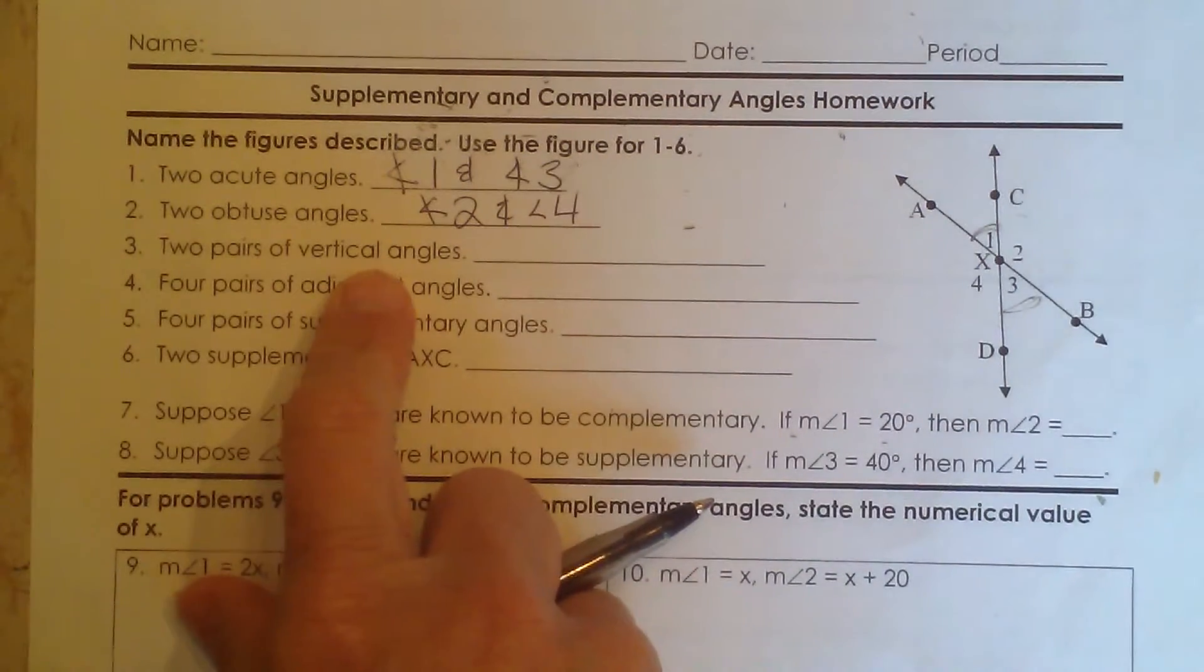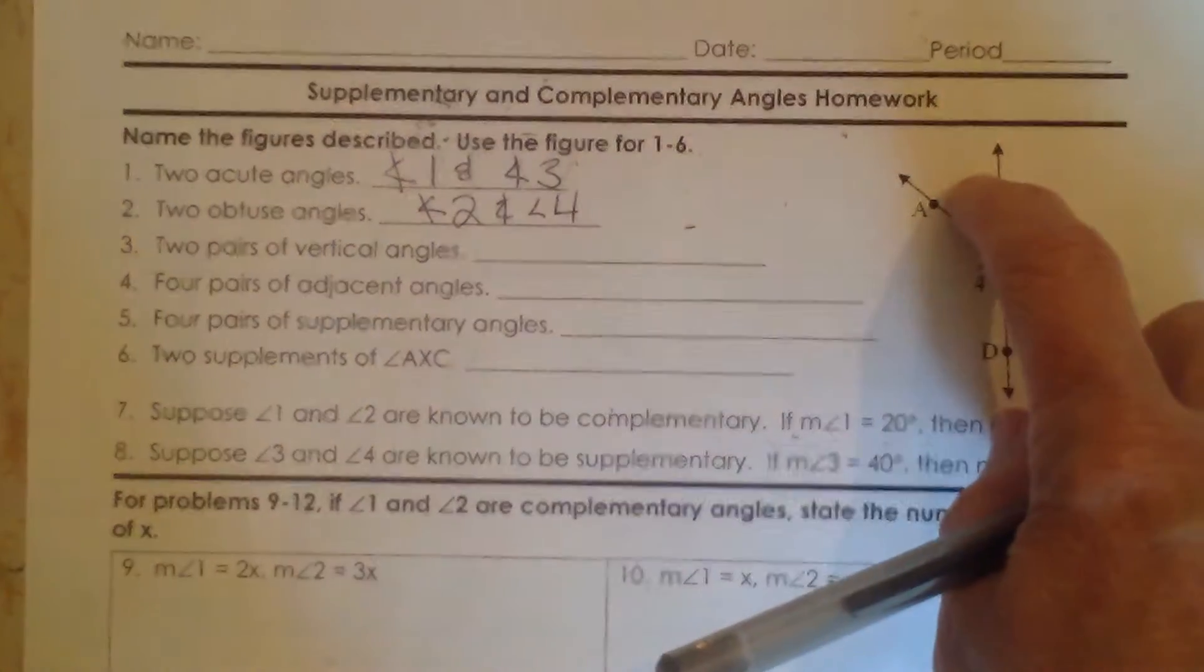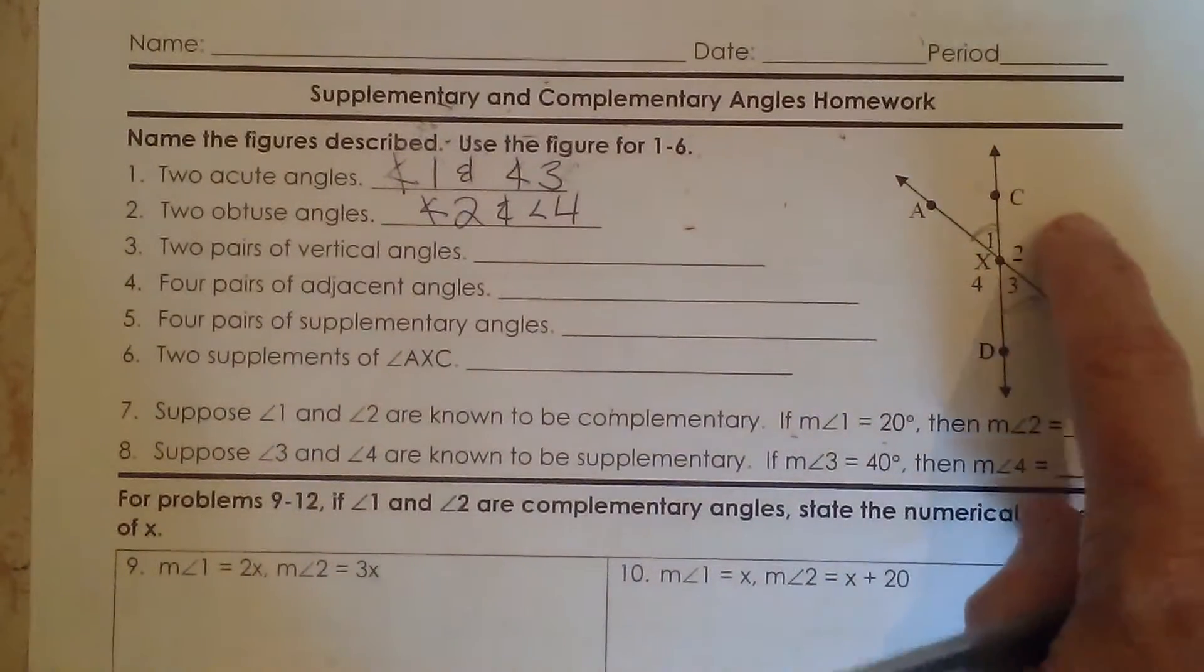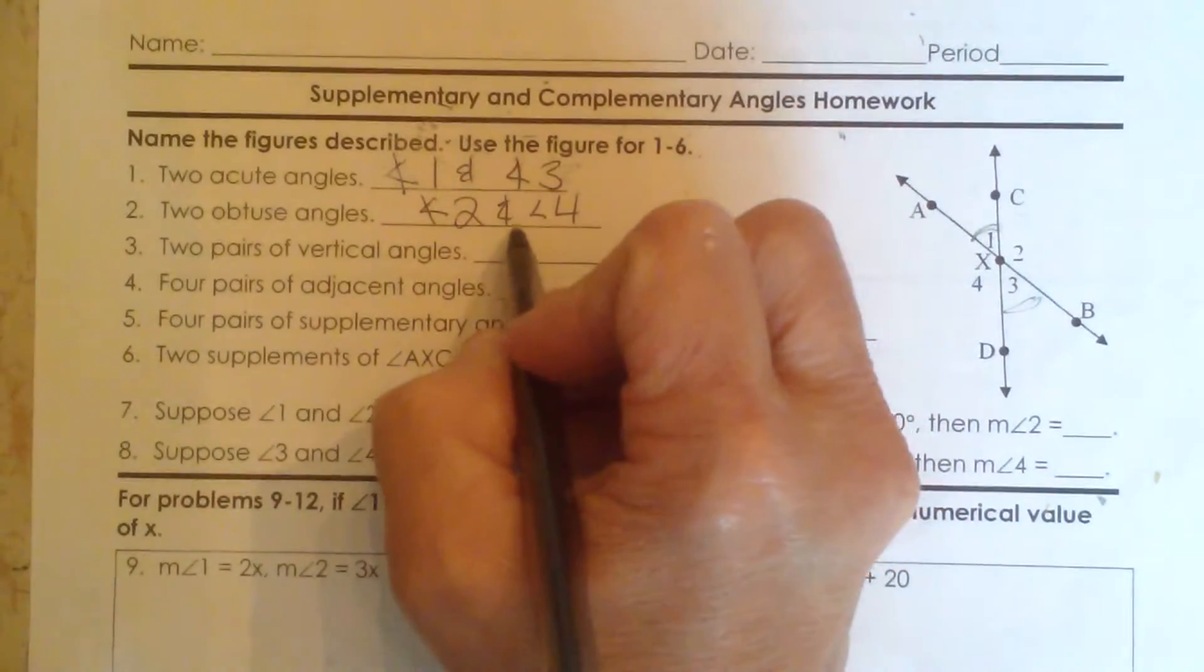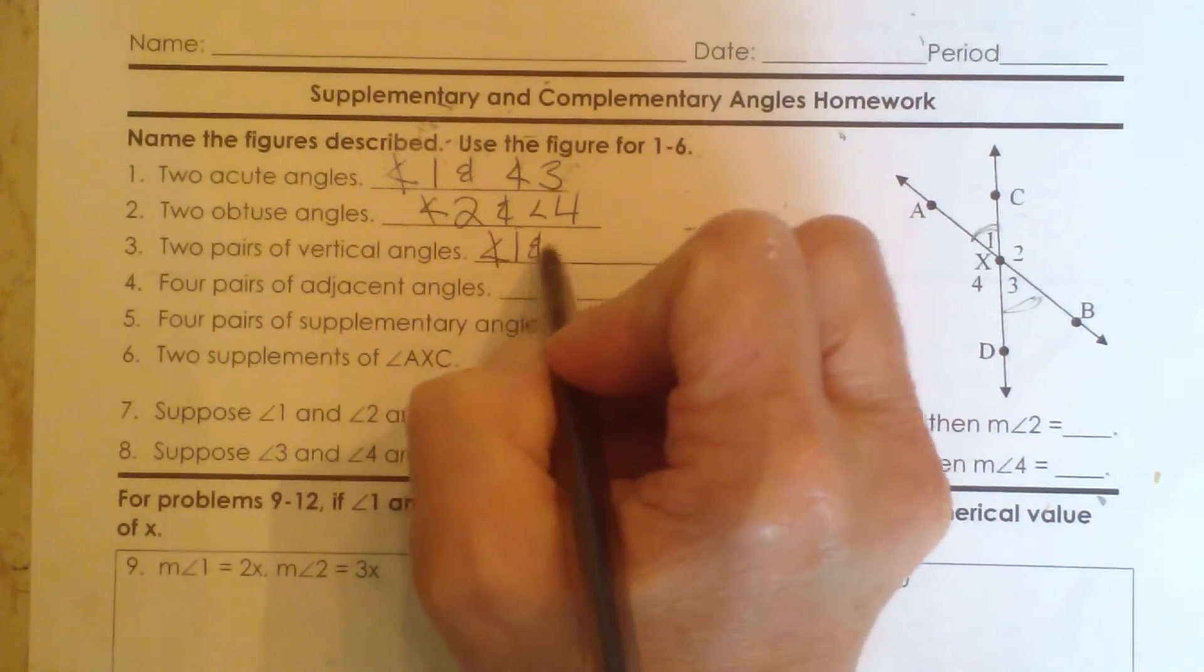Now two pairs of vertical angles. Vertical angles are across from each other, so angle 1 is across from angle 3 and angle 2 is across from angle 4. So a pair of vertical angles is angles 1 and 3, and angles 2 and 4.